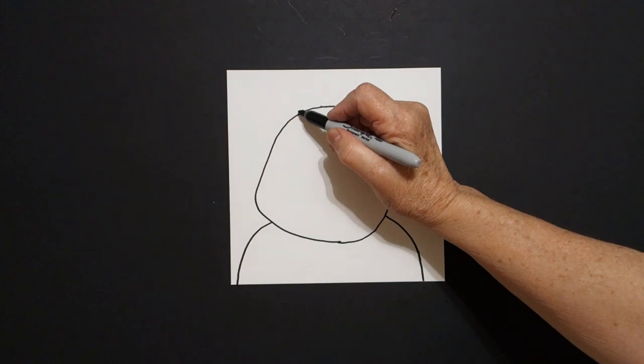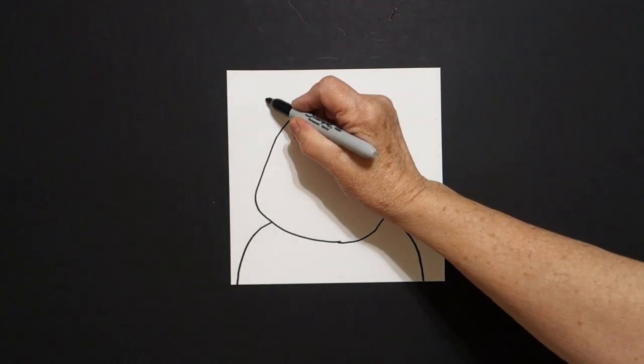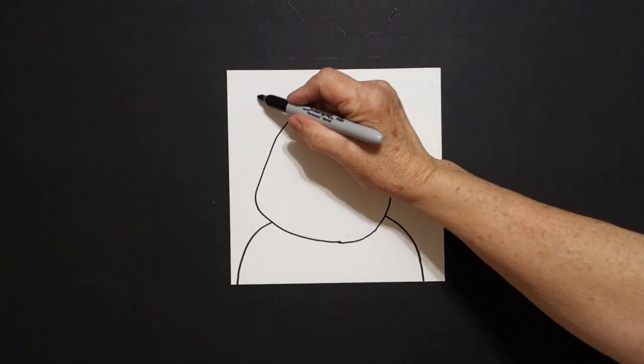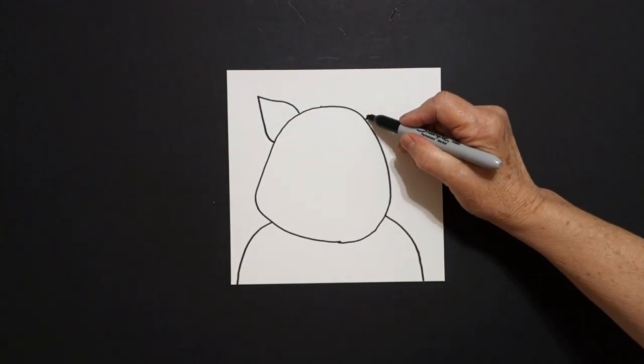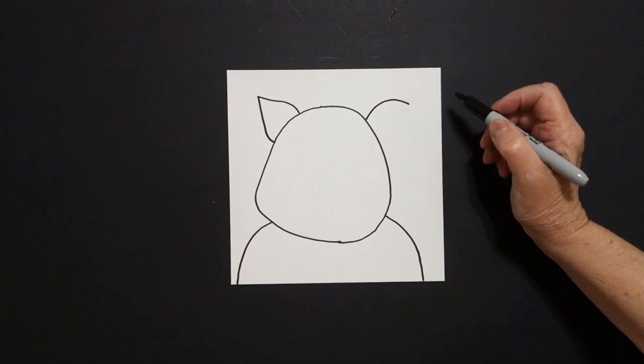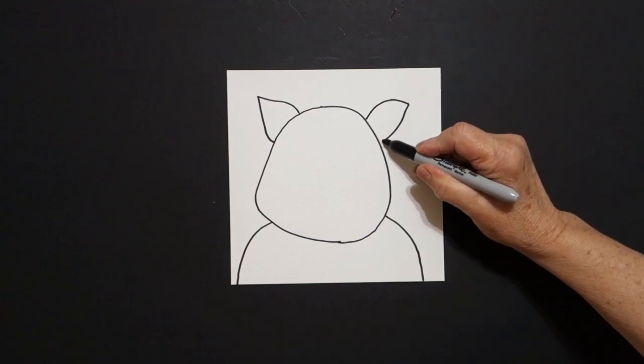Come up to the left, up here at the top and we're going to draw a curved line up, curved line down, connect. Come over here on the right, curved line out, curved line in, connect.